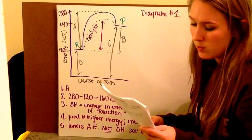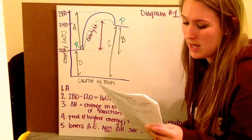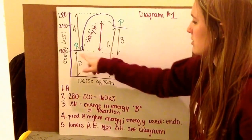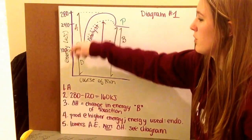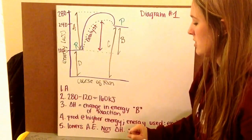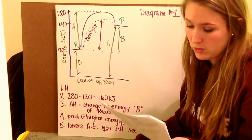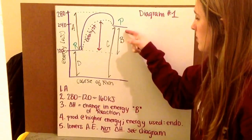Three asks, what letter represents my change in energy for the reaction, my delta H? And what is its value? Well, my change in energy is the amount between my reactants and products. My products are finishing at 240. My reactants are in at 120. 240 minus 120 is 120 kilojoules. And this is represented by letter B.